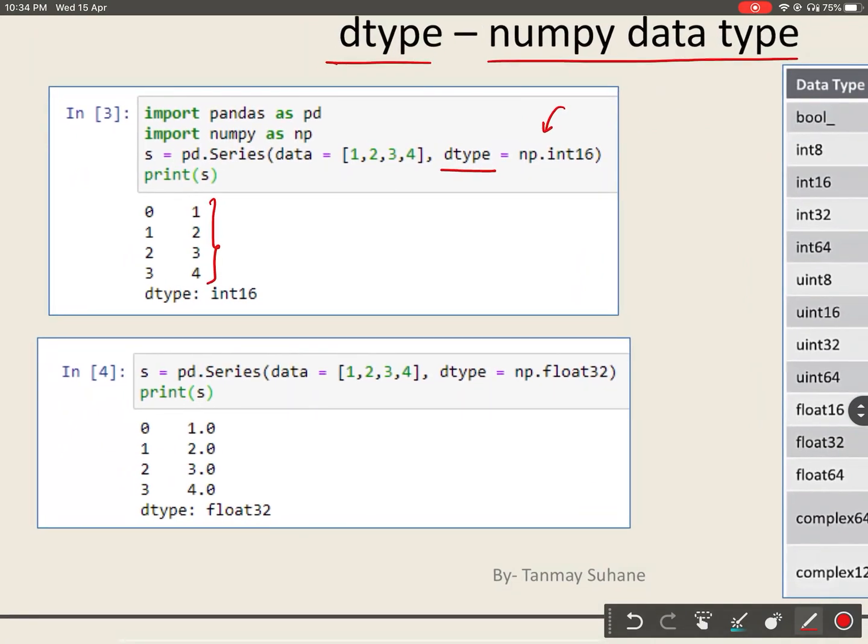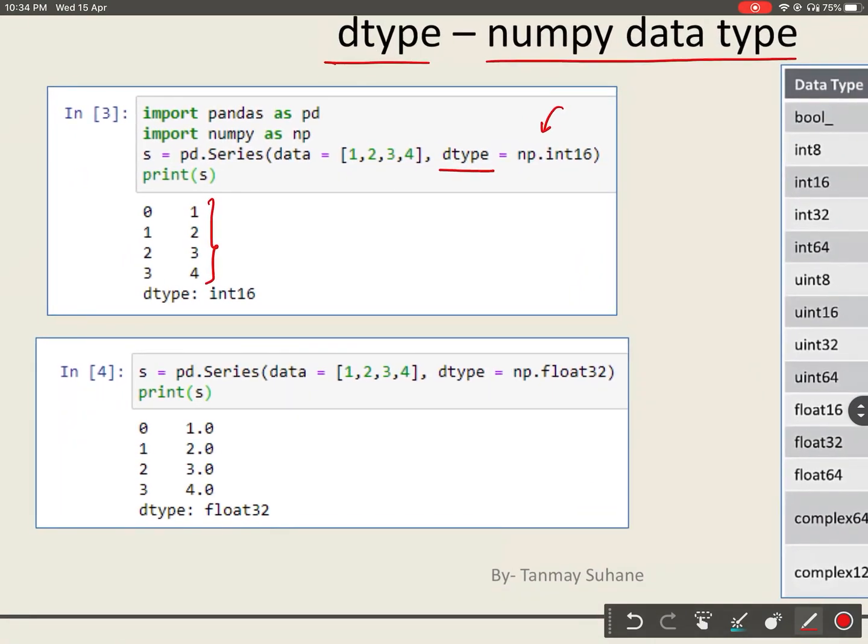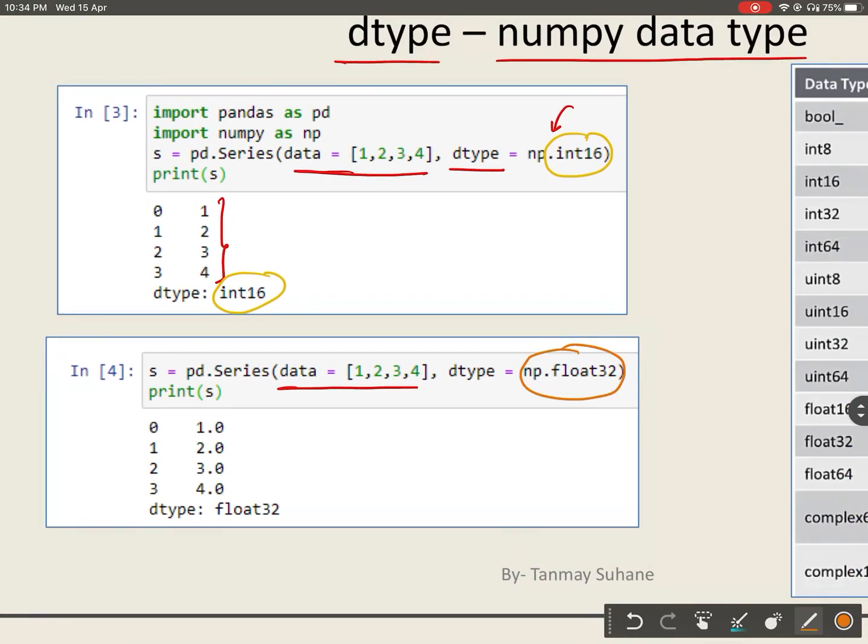See these two examples. Here I am creating the same series with same data but with different data types. Here the data type is int16. In the second example the data type is float32. Because I have changed the data type, that is why it is coming in decimal format.